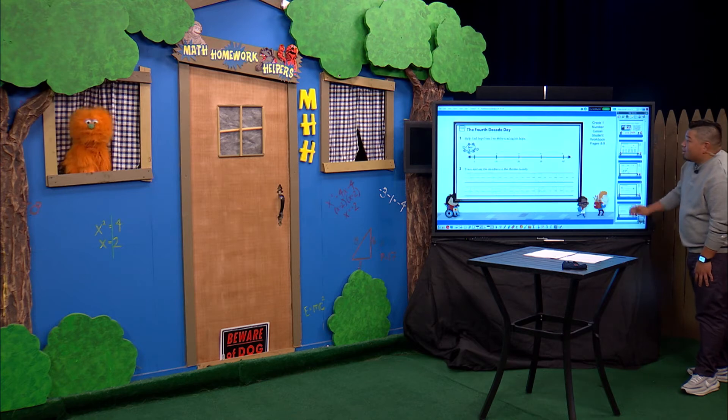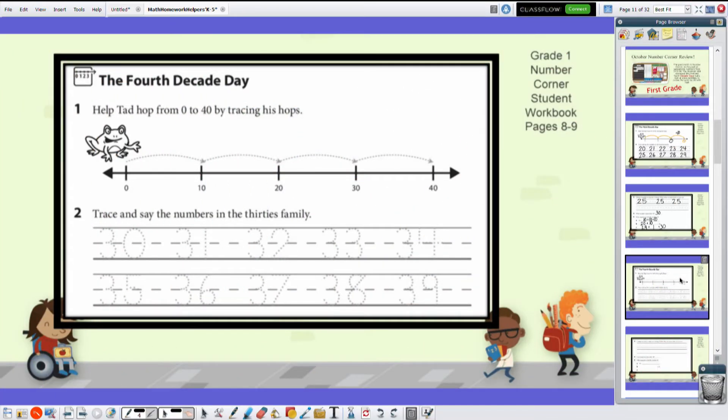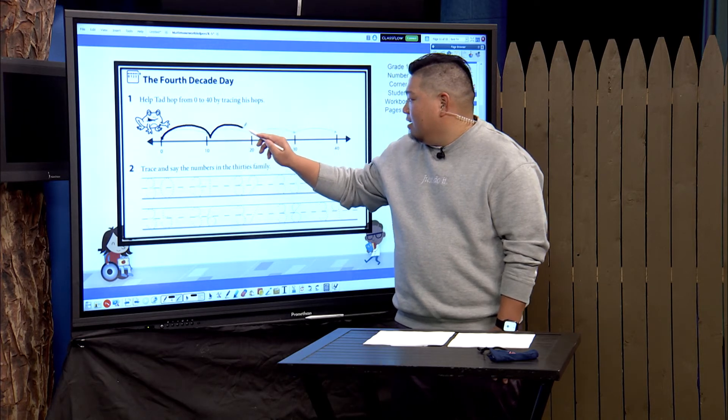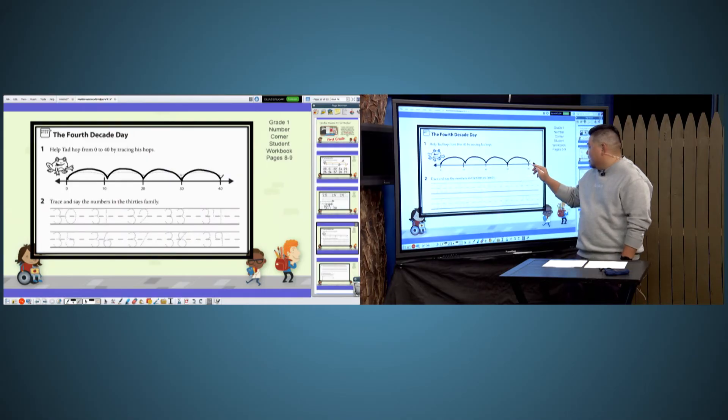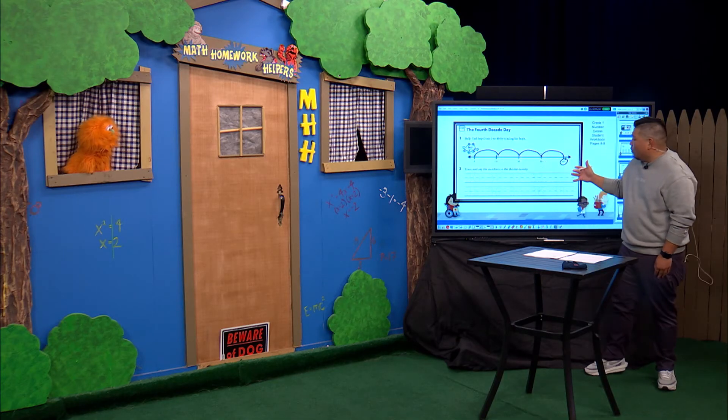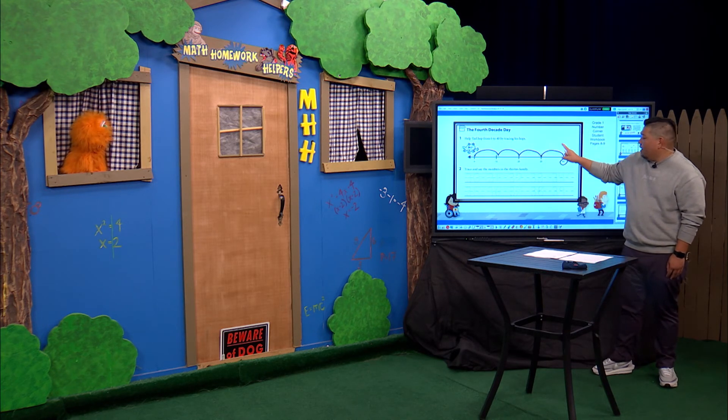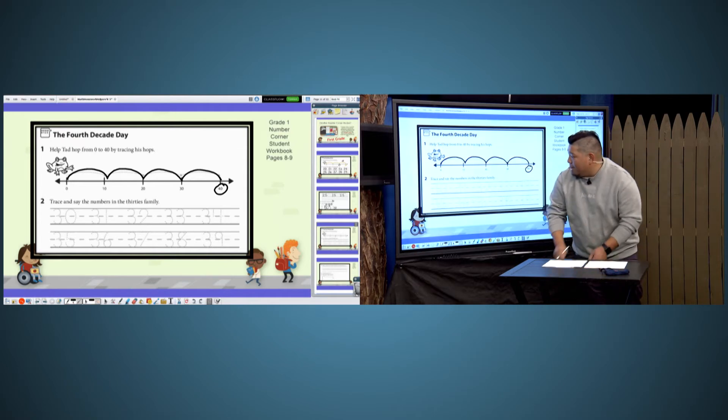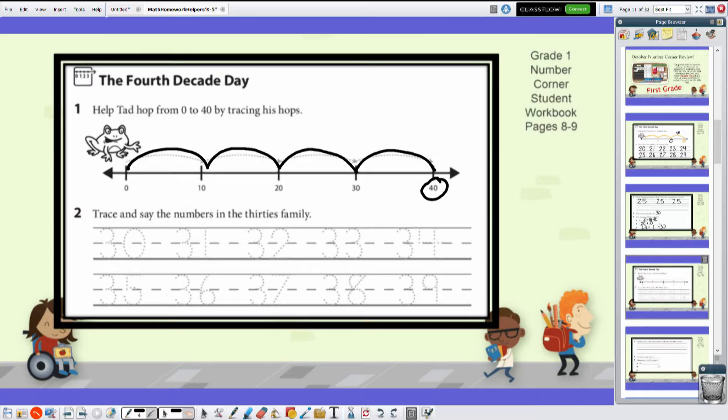And now we're going to look at the fourth decade. So we can move a little bit faster now that we've kind of seen the patterns here. But let's go ahead and help Tad now move from 0 to 40. All righty. Let's do this. We add 10. We get to? 10. Another 10? 20. Another 10? 30. And another 10? 40. 40. Cool. So take a look. How many times do we have to hop from 0 to get to 40? 1. 1. 2. 3. 4. 4. Good job, Max. Thank you, Mr. Tang. Now we're going to trace and say the numbers in the 30s family. Let's go ahead and use... Oh, green, green, green, green. Green. Yeah. Just because you asked so nicely. Thank you, Mr. Tang.